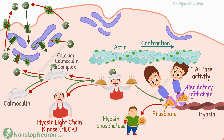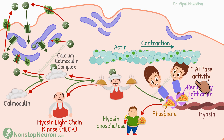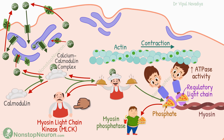Now let's have a quick summary. The calcium for smooth muscle contraction comes from extracellular fluid as well as sarcoplasmic reticulum. Inside the cell, the calcium binds with calmodulin, and then the calcium-calmodulin complex activates myosin light chain kinase. This enzyme phosphorylates the regulatory light chain of myosin, which restores the ATPase activity of the myosin head. This allows the myosin cross-bridge cycle, producing muscle contraction. To reverse the process, calcium is pumped back into the extracellular fluid and sarcoplasmic reticulum, inactivating myosin light chain kinase, and the phosphate from the regulatory light chain is removed by myosin phosphatase.